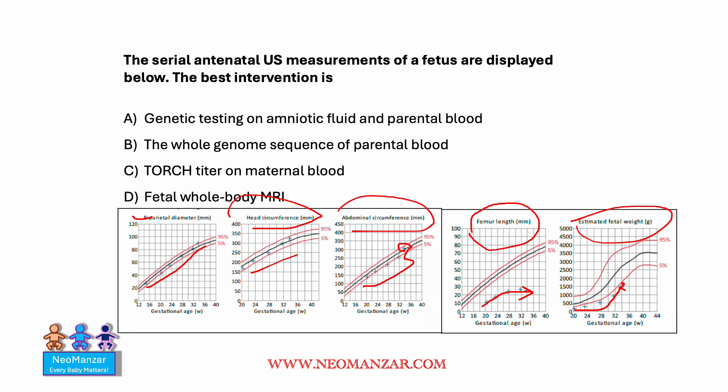Now let's try to dissect the answer choices. Genetic testing on amniotic fluid and parental blood — both mother and father — looks like the right choice. Whole genome sequencing of only paternal blood won't give you enough information; we need the baby as well, so amniotic fluid is also important — that option is out. TORCH titers don't fit because the head circumference is spared, so that is out again.